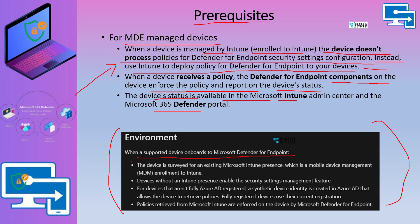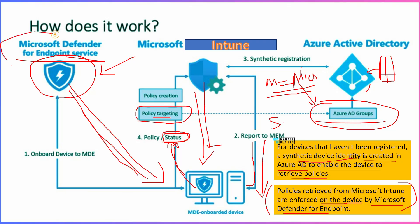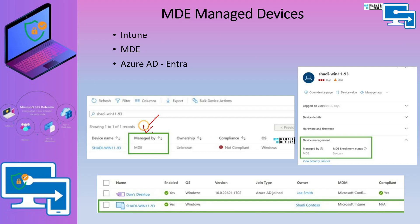When a supported device onboards to Microsoft Defender for Endpoint, it is surveyed for existing Microsoft Intune presence. Devices without Intune presence have the security settings management feature enabled — this new MDE feature is only enabled if the device is not enrolled to Intune. Policies retrieved from Microsoft Intune are then enforced on the device by Microsoft Defender for Endpoint.